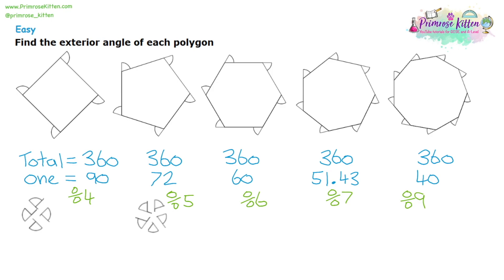Interestingly, the majority of these questions are going to give you whole number answers. Only numbers like seven or eleven are going to give you decimal numbers. This is why 360 was chosen to represent a circle — because you can divide 360 in lots and lots of ways and get whole number answers. You'll almost always get a whole number answer unless you're dividing by usually odd prime numbers like seven, eleven, or thirteen.